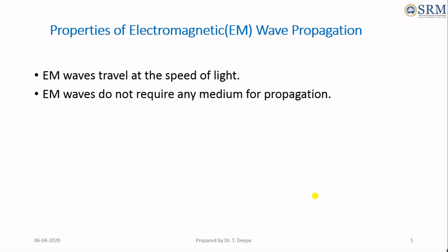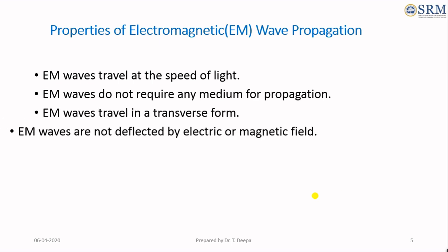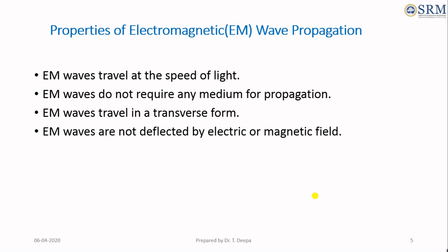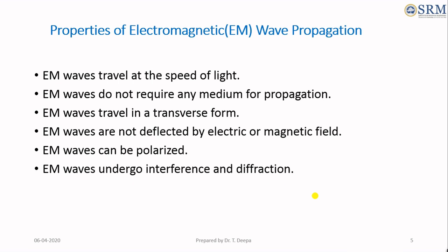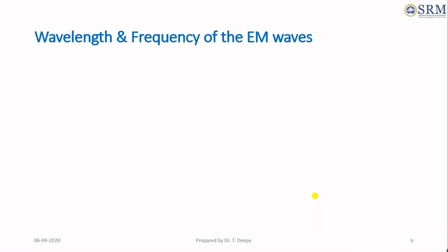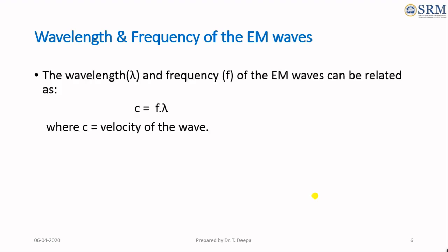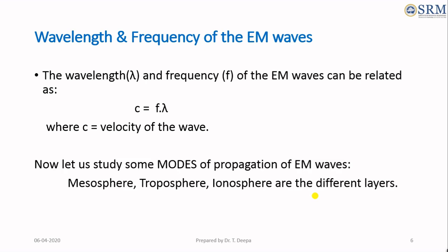Let us look at the properties of electromagnetic waves. EM waves travel at the speed of light. These waves do not require any medium for propagation. These waves travel in a transverse form. These waves are not deflected by electric or magnetic fields. These waves can be polarized. These waves undergo interference and diffraction. The wavelength and frequency of electromagnetic waves can be related as c = f × λ, where c is the velocity of the electromagnetic wave.